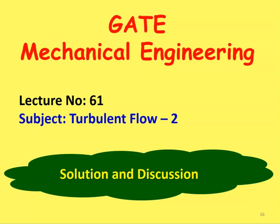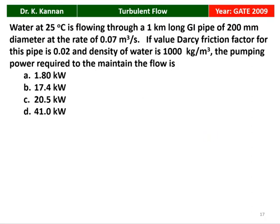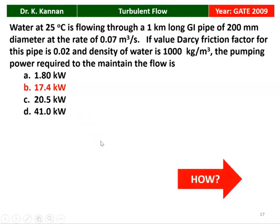In the earlier lecture, we solved a few problems in turbulent flow in the subject Fluid Mechanics, and we take a few more examples here. The first example is from the 2009 question paper: water at 25 degree Celsius is flowing through a 1 kilometer long GI pipe of 200 millimeter diameter at the rate of 0.07 meter cube per second. If the Darcy Friction Factor for this pipe is 0.02 and density of water is 1000 kilogram per meter cube, the pumping power required to maintain the flow is 17.4 kilowatt.